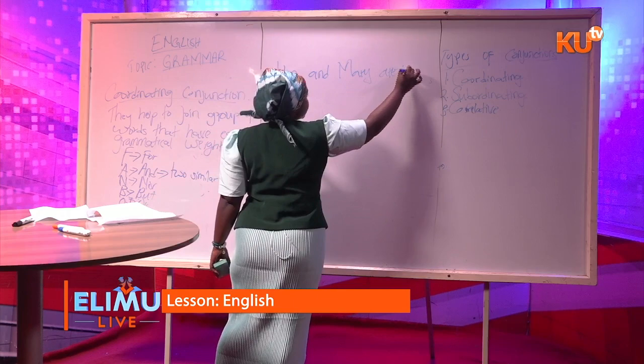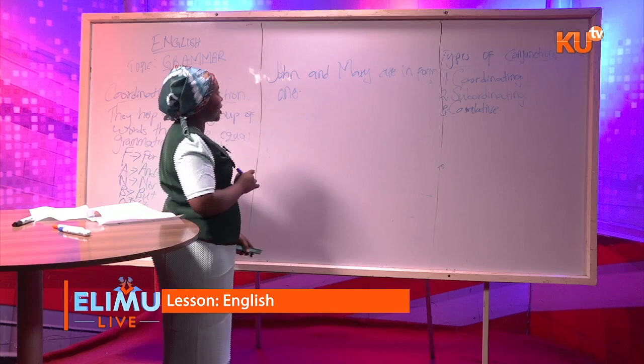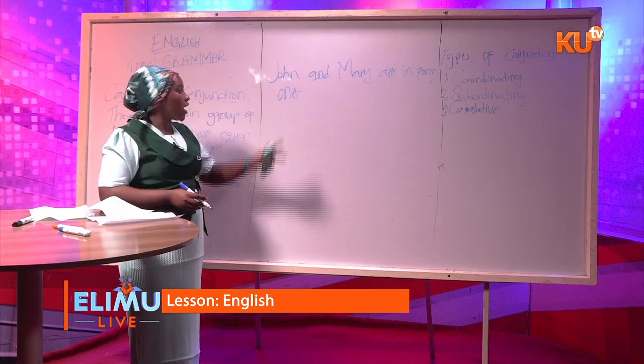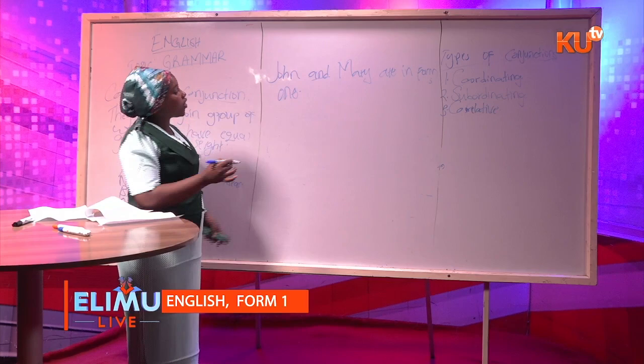In the sentence 'John and Mary are in form one,' I've used 'and' to join two similar ideas: John is in form one, and Mary is also in form one. Instead of having two sentences, I use 'and' to join these two similar ideas and come up with one sentence.